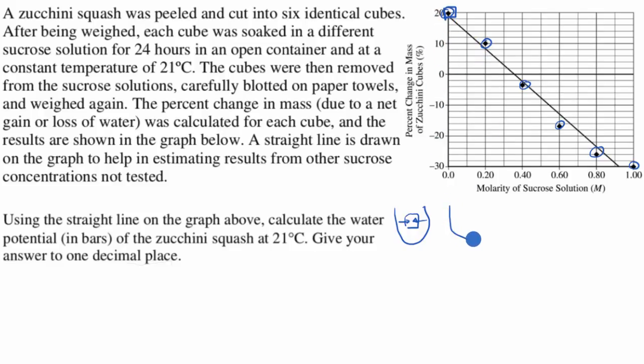This second data point right over here, it was put into a solution that is 0.20 moles per liter of sucrose and that also had an increase of mass, but it was a smaller increase of mass. And then we could go all the way to the extreme right over here where we had a zucchini cube put into a solution that had a lot of sucrose in it, one mole per liter, and there you have a net outflow of water. It decreased the cube's mass by 30%. So how do we figure out the water potential of the zucchini squash?